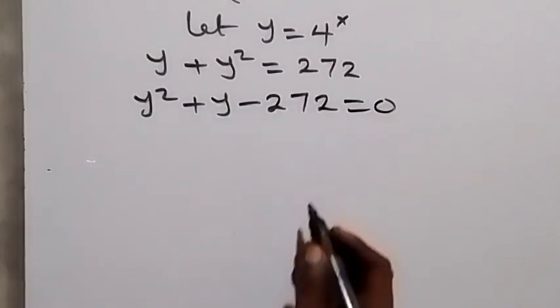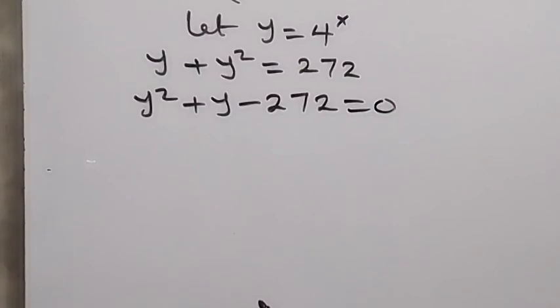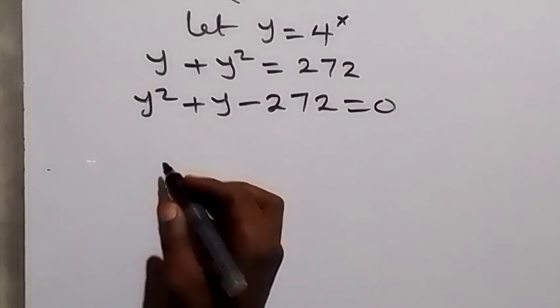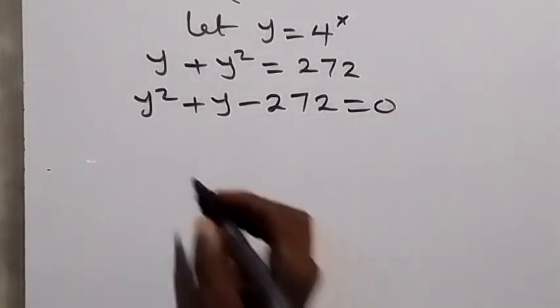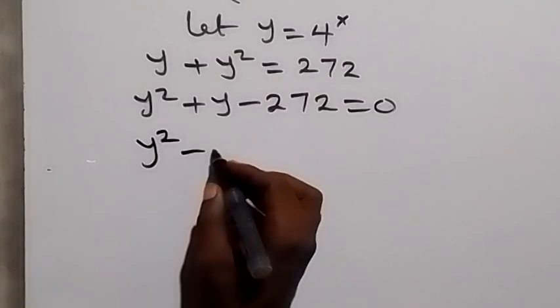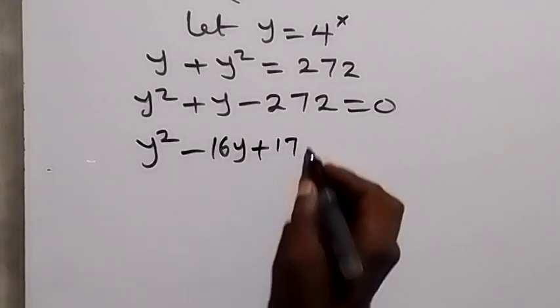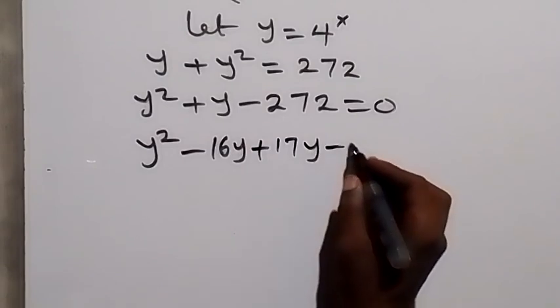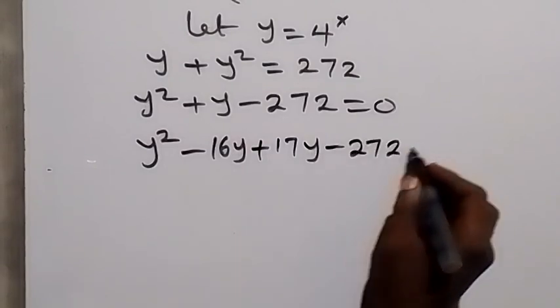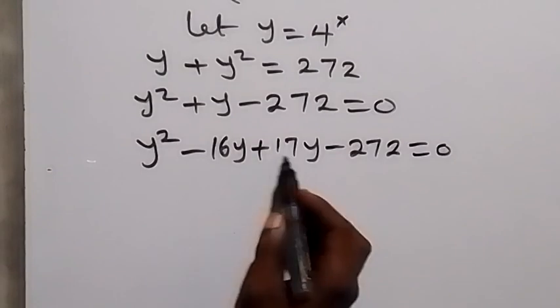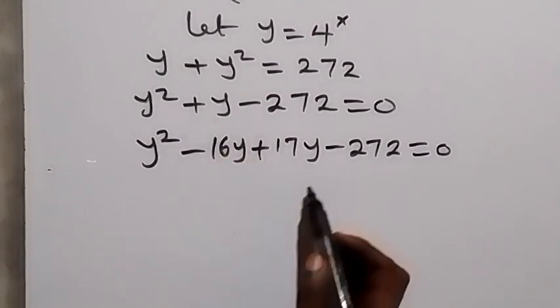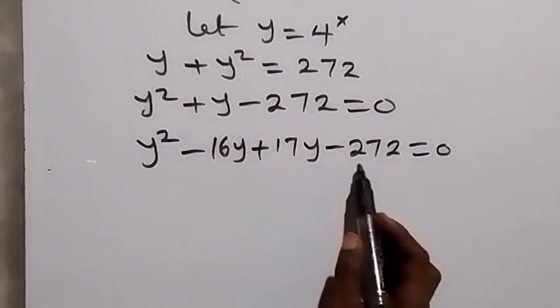We can factorize this, and the two factors there will be minus 16 plus 17, and that will be y square minus 16y plus 17y minus 272 equals zero. So when we add this together we have plus y, and we multiply it to give us minus 272.